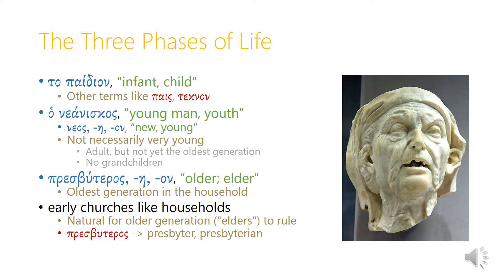That oldest phase is represented by the adjective presbyteros, presbytera, presbyteron, which means 'older,' and when used as a substantive — ha presbyteros — it means 'elder,' the oldest generation in the household. Early churches were often structured like households, so it was natural for people already called elders to rule, because in ordinary households that older grandparent generation would generally be obeyed by the younger adults and children. Presbyteros is the word that comes down to us in terms like presbyter and presbyterian, because over time this word that originally meant an old person came to be seen as an office in church leadership.